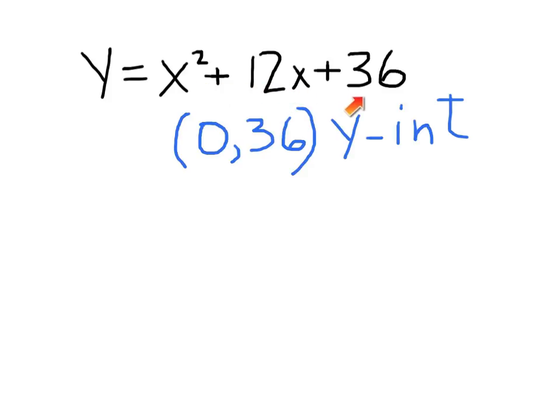So this we should instantly be able to recognize as this type of thing here. Zero, where y is zero, and this equals x plus 6 squared. And again, if this is a plus here, then we get the plus down here. If this were a minus, then we'd have a minus down here.